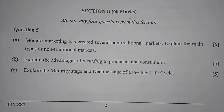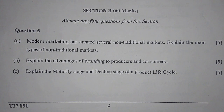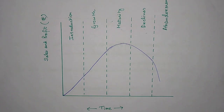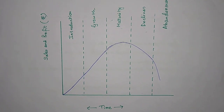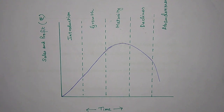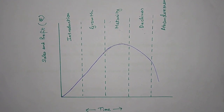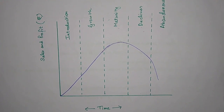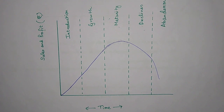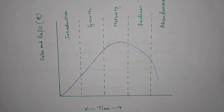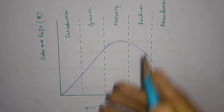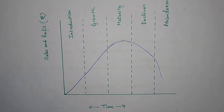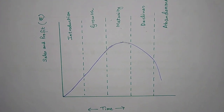Question 5c: Explain the maturity stage and the decline stage of the product life cycle. Here we have a graph of the product life cycle. In the maturity stage, the sales of the product increase rapidly and reach their peak, as seen in the graph, after which they start to decline. This stage shows both growth and decline of the product.